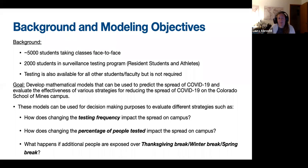These models can be used for decision-making purposes to evaluate strategies such as: how does changing the testing frequency — that is, how frequently the surveillance testing program individuals are being tested — impact the spread on campus; how does changing the percentage of people tested impact the spread; and what happens if additional people are exposed after different breaks like Thanksgiving, Winter, and Spring Break.